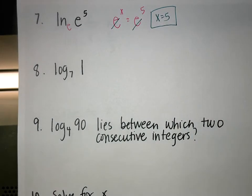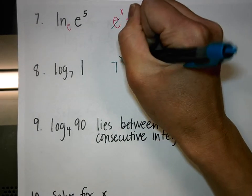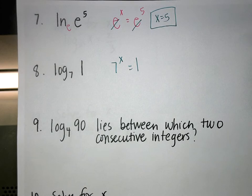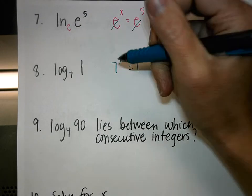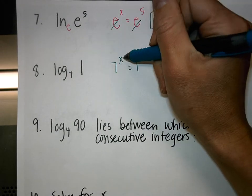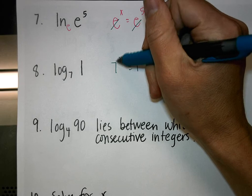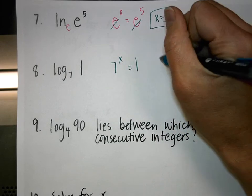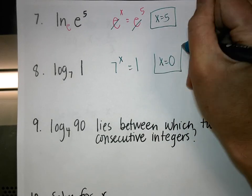Number 8: 7 to what power equals 1? This is similar to number 6 — anything to the 0 power is 1, so the answer is 0.